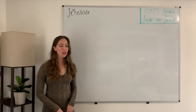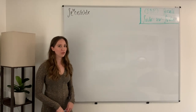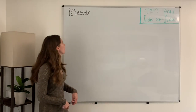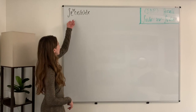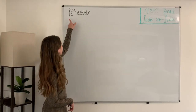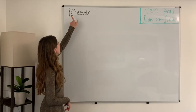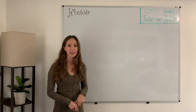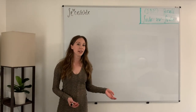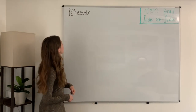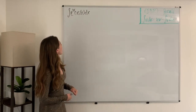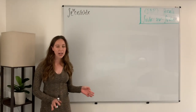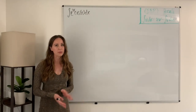Our next example of an integral for which we'll use integration by parts is this integral. Here we have the integral of e to the 3x times cosine of x. Again, we have a product of two different functions, but the thing we should pay attention to is which type of functions we have.